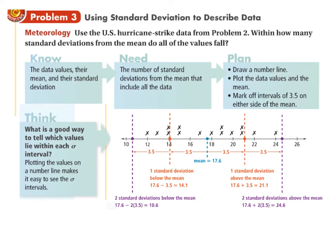A common question to ask is within how many standard deviations from the mean do all of the values fall? So one thing we can do is we could make a number line, plot all of the different data values. There's our x's over our number line. You can plot the mean 17.6 and the standard deviation again we can round to about 3.5 for our purposes here. So if we look at this from about 14.1 to 21.1 that's within one standard deviation. So one standard deviation above the mean and one standard deviation below the mean.